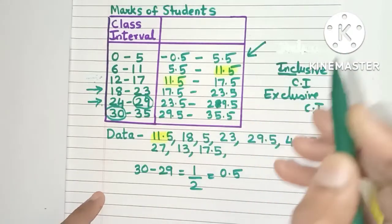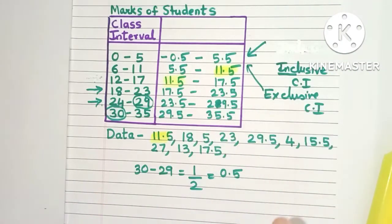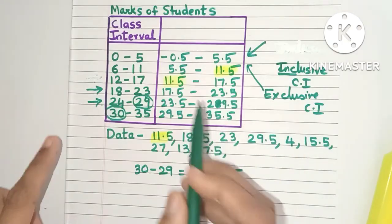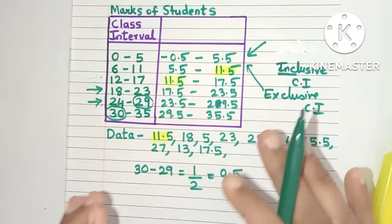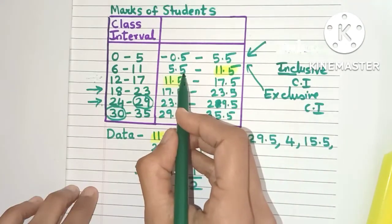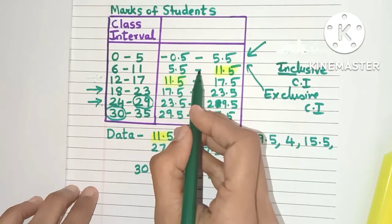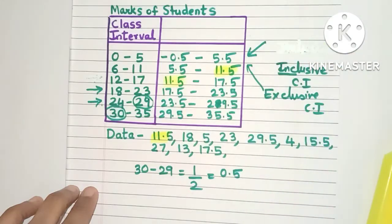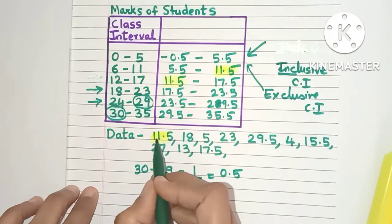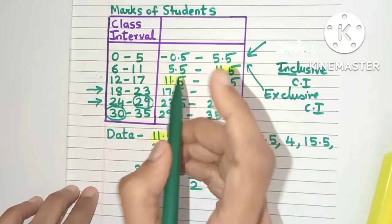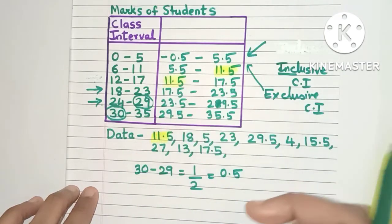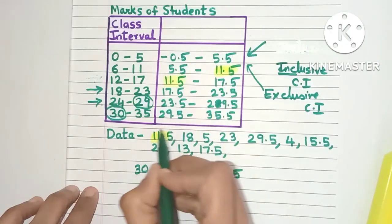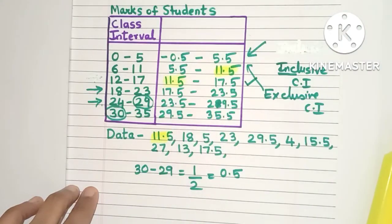That's why this class interval is known as exclusive class interval because only the lower limit is included in the class. The upper limit is excluded. So in this class interval 5.5 is included but 11.5 is excluded. So where will 11.5 get included? Yes in this class interval because the lower limit is 11.5 which will be included. So we will add 11.5 in this class interval.